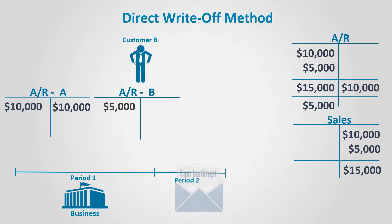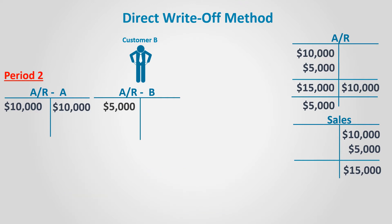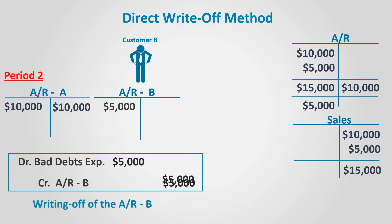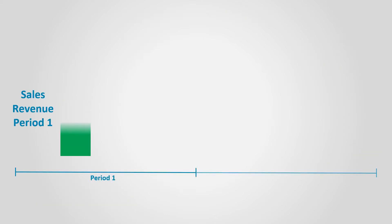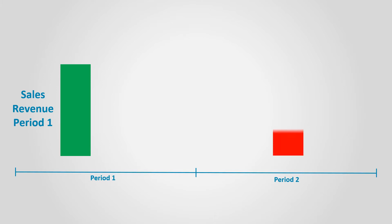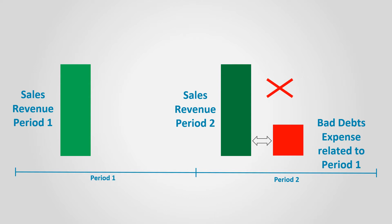But what if Customer B defaulted in a following period and not in the same period? The same journal entry will be recorded — debiting bad debts expense and crediting Customer B's account — but this will create a problem. The sales of Customer B are recorded as sales revenue in period one, and the bad debts expense is recorded in period two. In this case, the matching principle is violated, because the bad debts expense related to period one's sales is recorded in period two and matched with the revenue of period two. That is why accounting standards don't approve such method except in very rare situations.